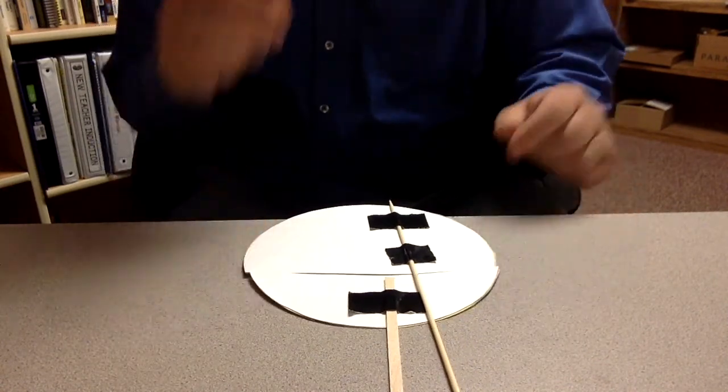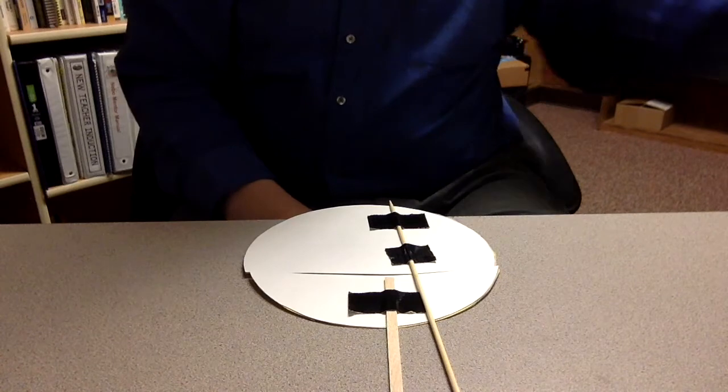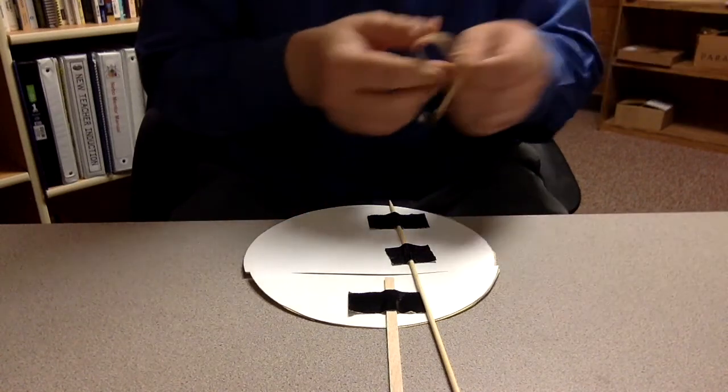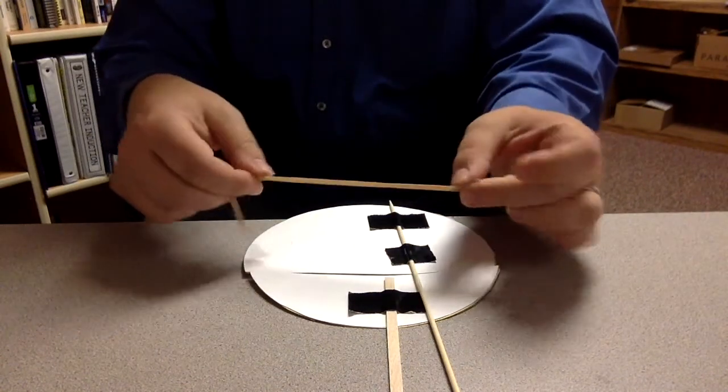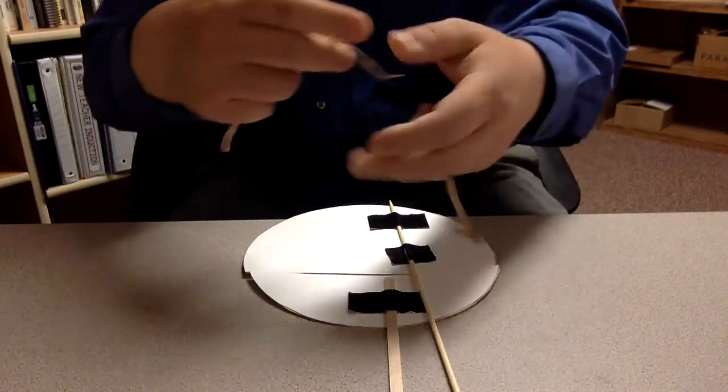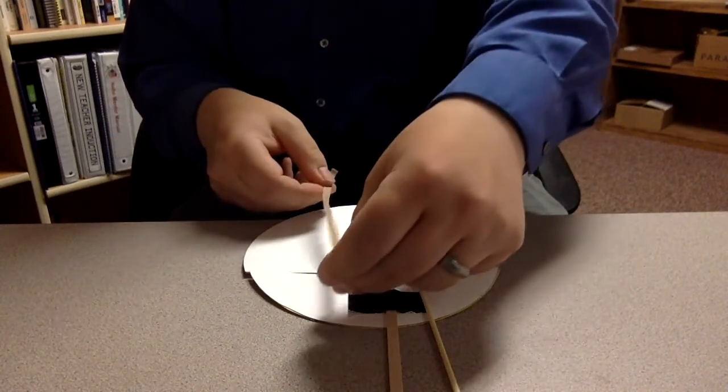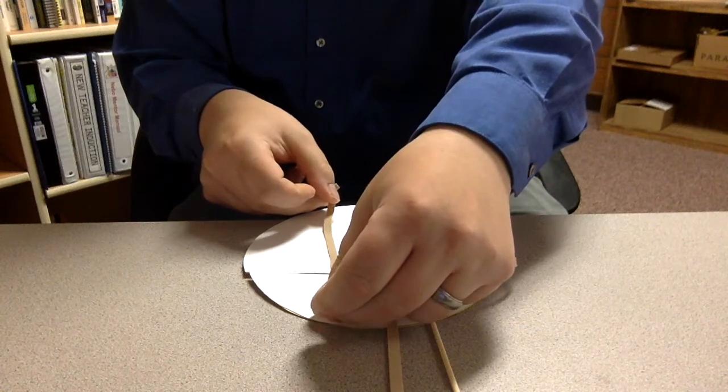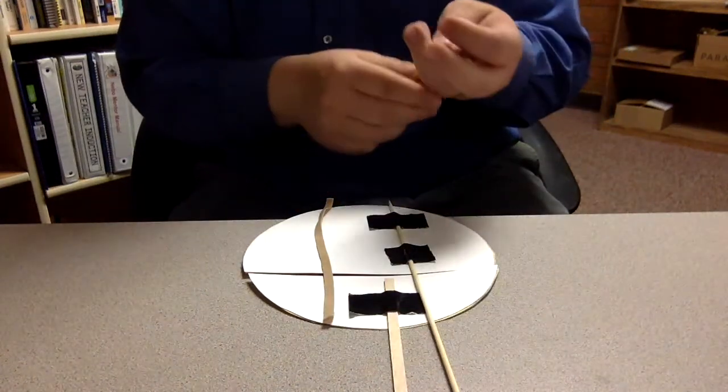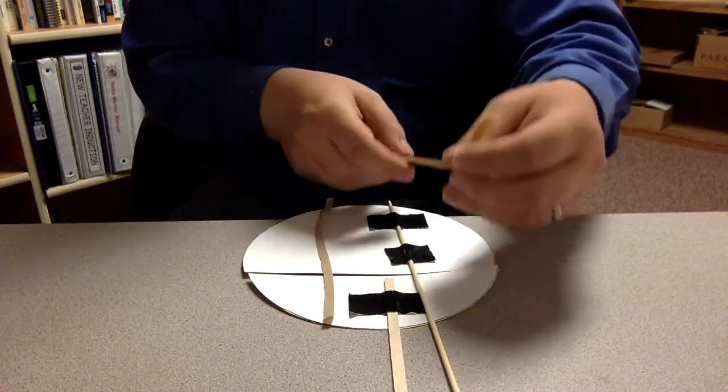Now the thing that's going to make the mouth move up and down are two rubber bands that I have just snipped so that it's a long, nice rubber band there. And we're going to attach the rubber band to both the top and the bottom of the parts.